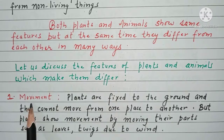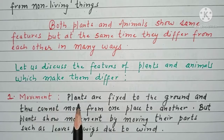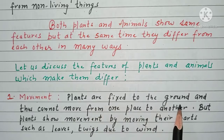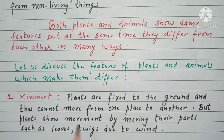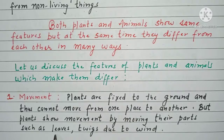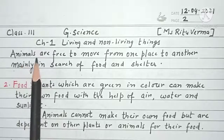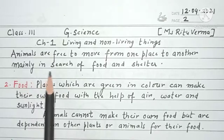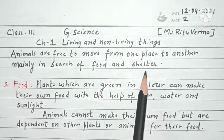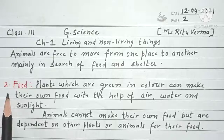The first point we will take up is movement. Students, as you all already know, plants are fixed to the ground and thus cannot move from one place to another. But plants show movement by moving their parts such as leaves and twigs due to wind. Animals, on the other hand, are free to move from one place to another, mainly in search of food and shelter.